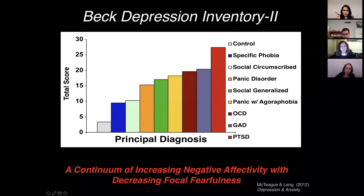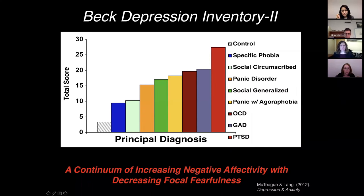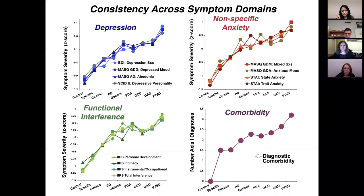On the left side we have controls, followed by specific phobia, social phobia circumscribed to performance situations — very focal fear disorders — followed by panic without agoraphobia, generalized social phobia, panic with agoraphobia, obsessive compulsive disorder, generalized anxiety disorder, and PTSD at the extreme. This continuum of increasing negative affectivity with decreasing focal fearfulness of the principal complaint is not limited to depression but is also evident in non-specific anxiety, functional interference, and comorbidity.